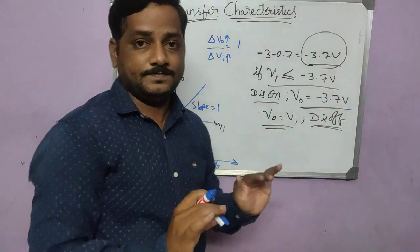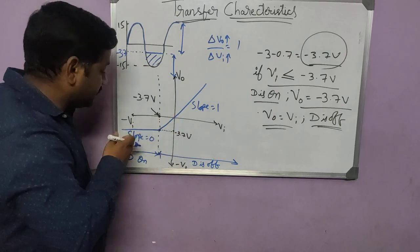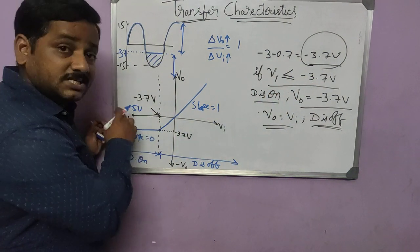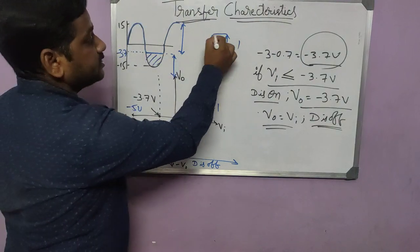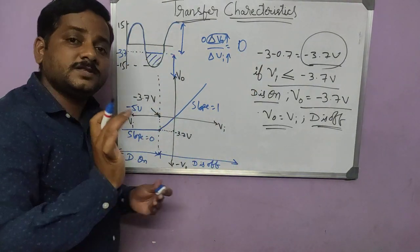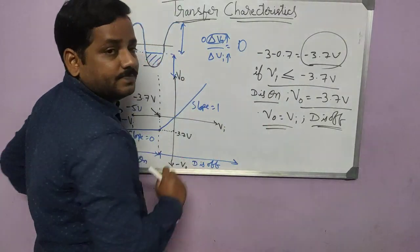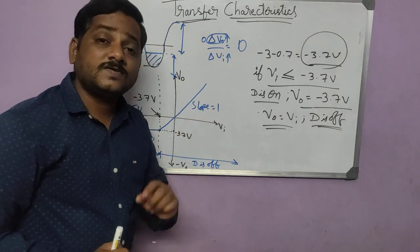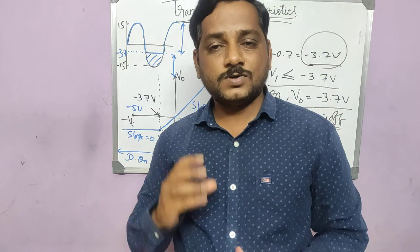In the clipping region, the slope is 0 — there is no variation in output even as you vary the input. If I say minus 3.7 or minus 5, the output remains the same constant value, so the slope is zero. Slope is 0 when the diode is ON, and slope is 1 when the diode is OFF. Mark and represent these key points clearly — this is how you draw the transfer characteristics for a parallel clipper.